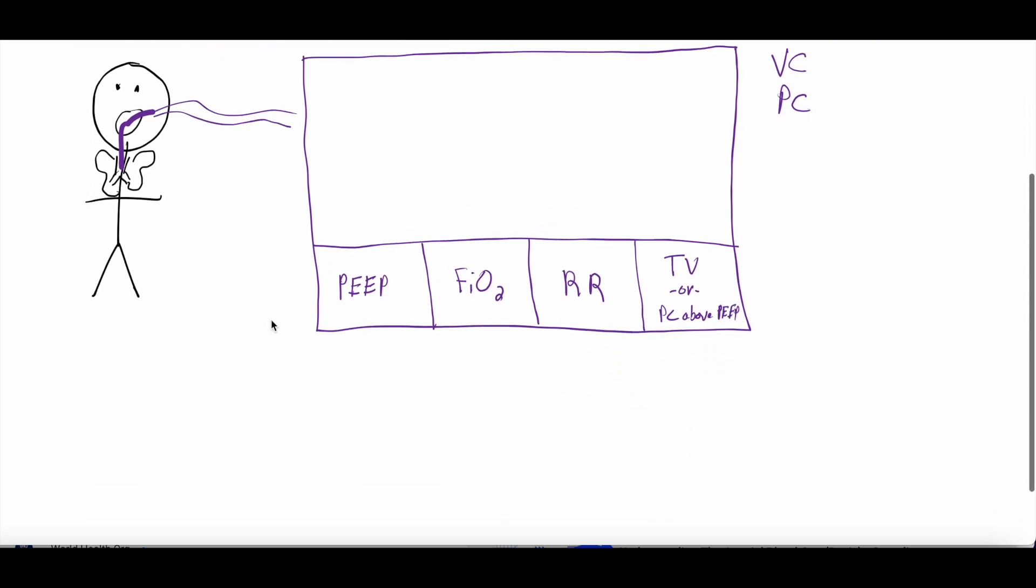So starting with the PEEP, the PEEP stands for positive end expiratory pressure. And what that is, is that is a constant pressure that the ventilator is always giving the patient. It doesn't matter if it's inspiration or expiration, that is the constant pressure that the patient is always experiencing.